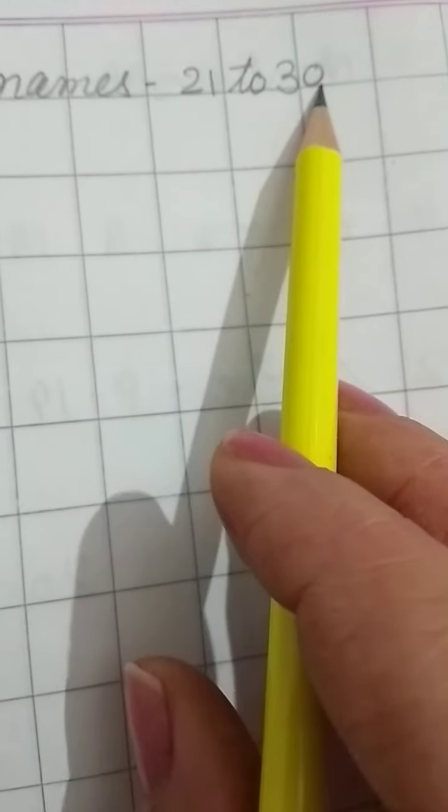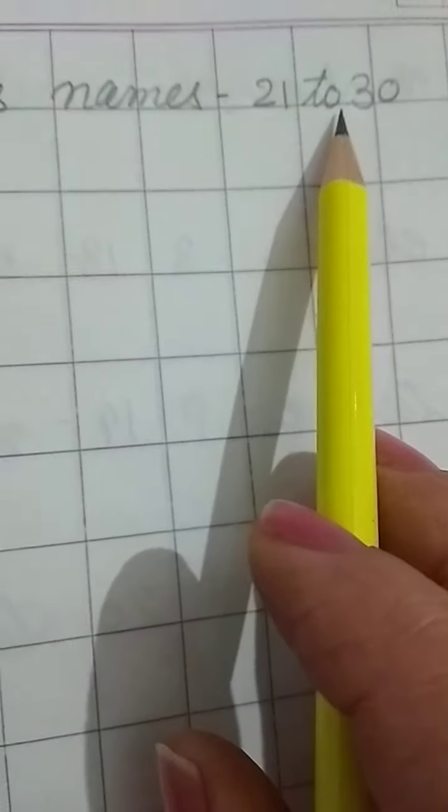Hello you kids, kids today we are going to learn number names, number names 21 to 30. Okay, so first of all you write the date. Now here we will write the heading number names 21 to 30. This is the only one to 20, now about 21 to 30. Okay, so let's start writing.